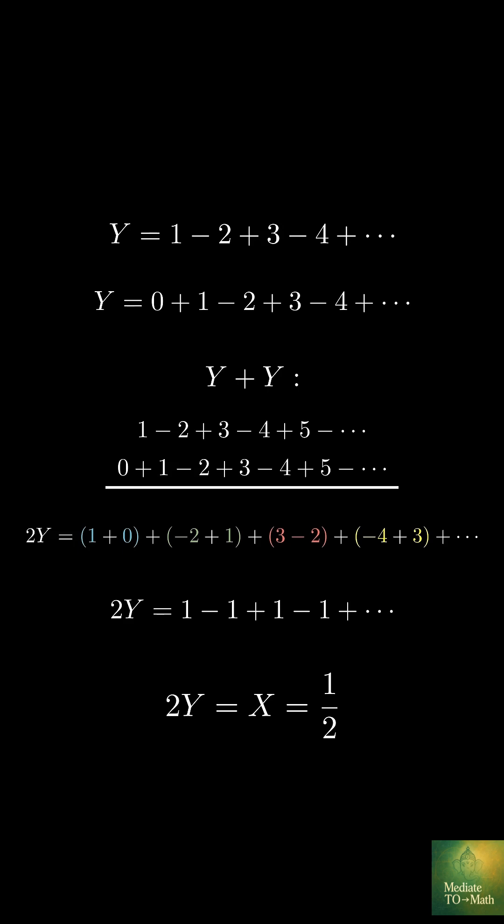This simplifies to 1 minus 1 plus 1 minus 1 and so on. That's just x. And we already know x equals 1 half. So 2y equals 1 half, which means y equals 1 fourth.